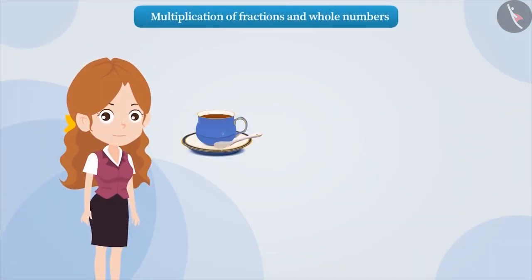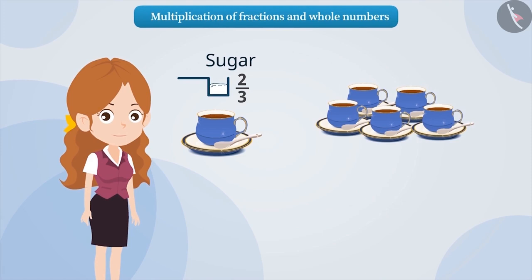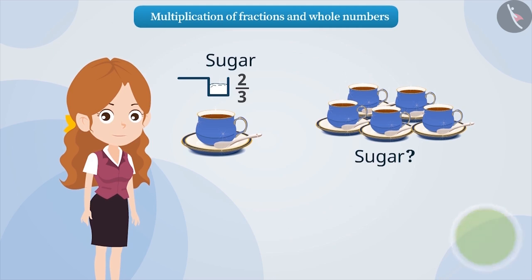Nisha makes good tea. To make one cup of tea, she adds 2 thirds teaspoon of sugar. How much sugar do you think she will need to make 5 cups of tea? In such situations, it becomes necessary to multiply fractions.